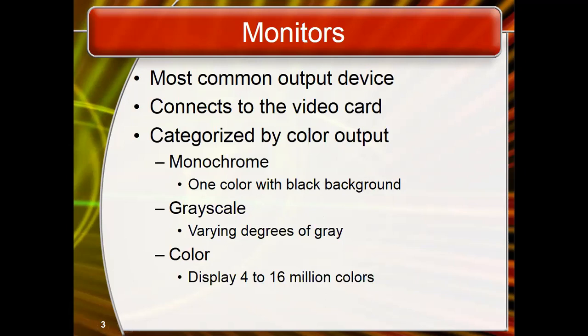Grayscale is a group of shades without any visible color. On a monitor, each pixel of a grayscale display carries an amount of light ranging from the weakest — black — to the strongest — white. Images on a computer display are composed of pixels. In color monitors, pixels are comprised of red, green, and blue dots, each with its own brightness level, which can be converted to grayscale.